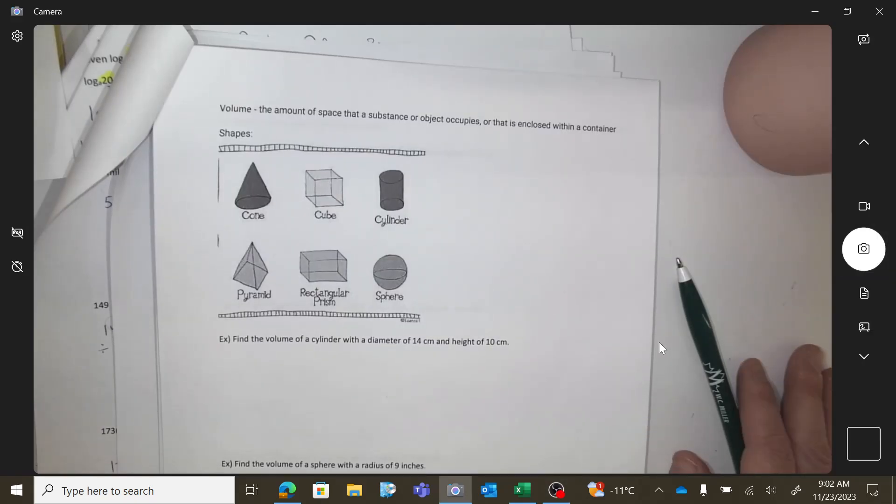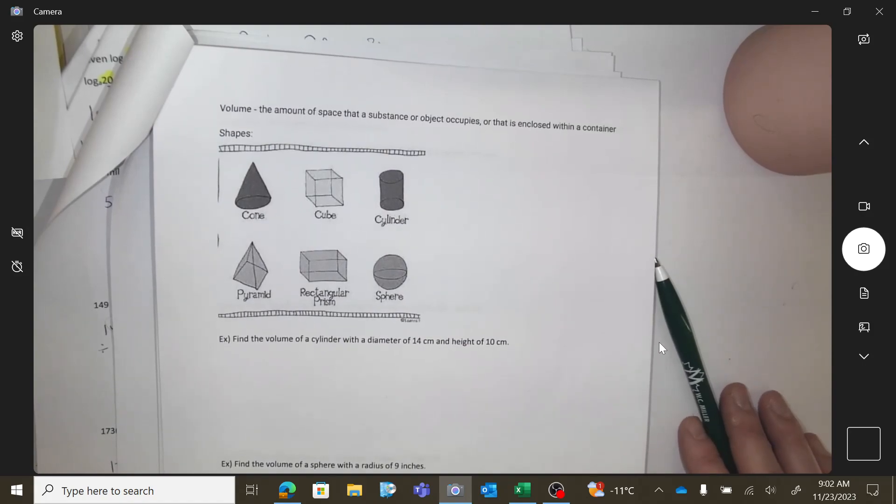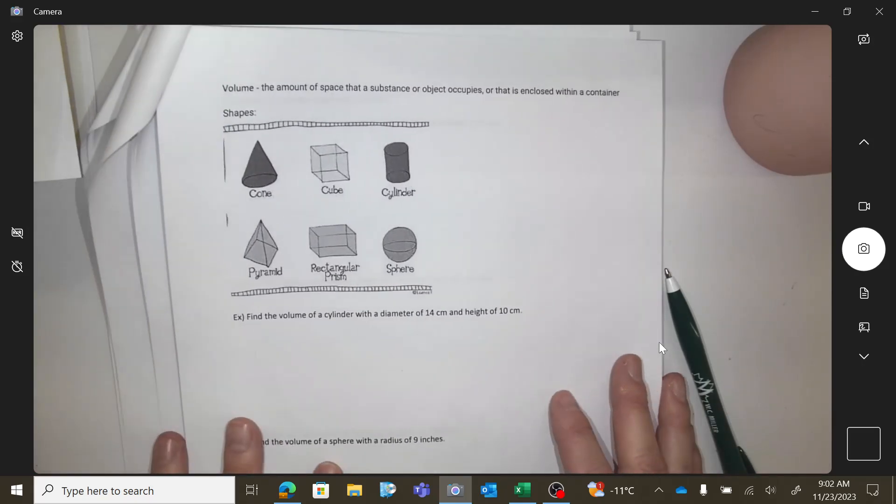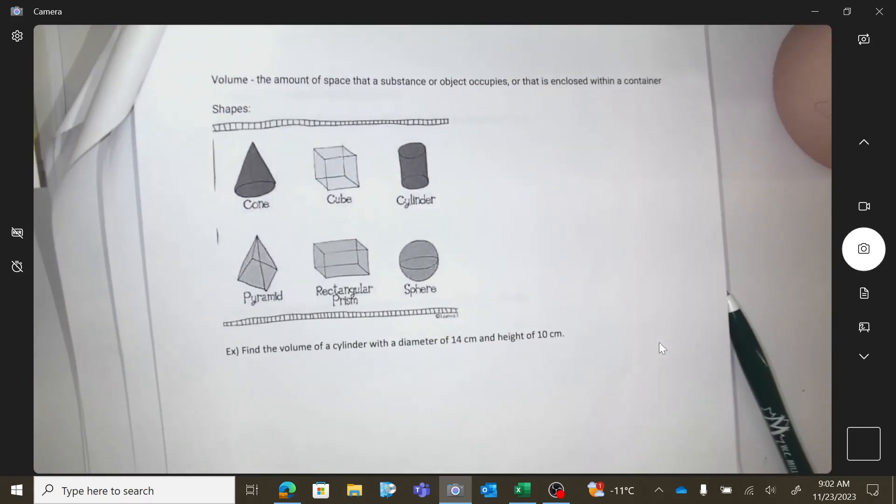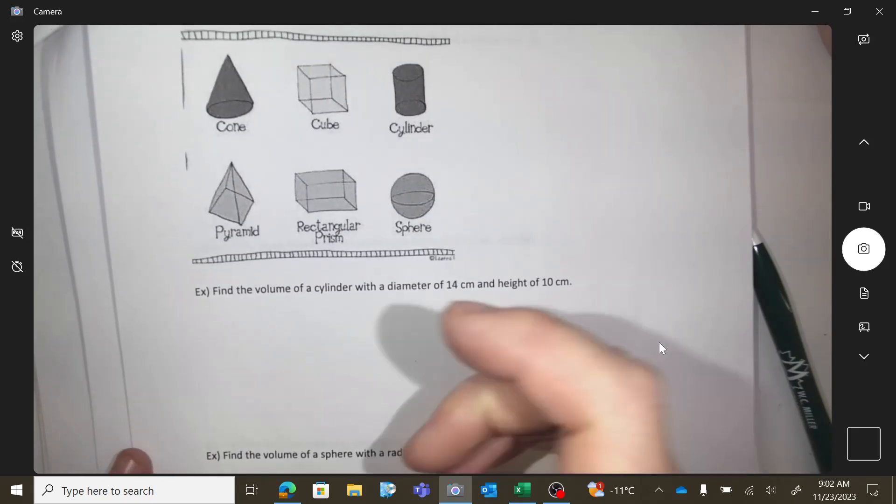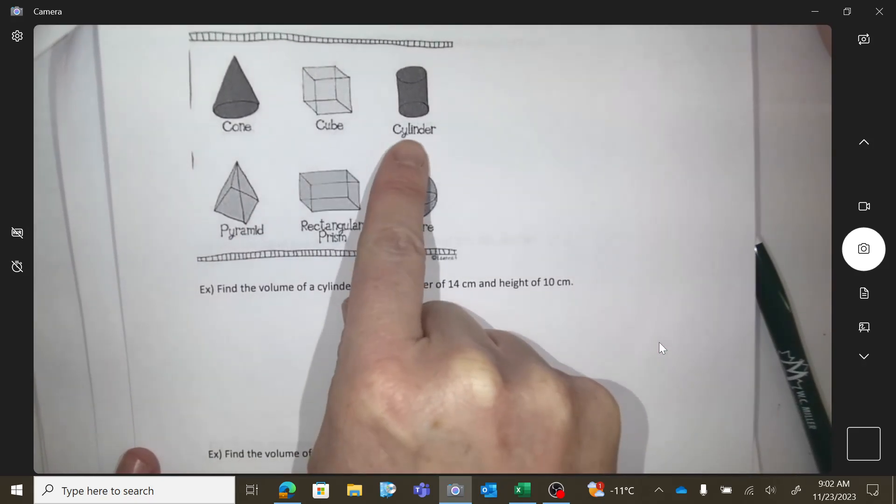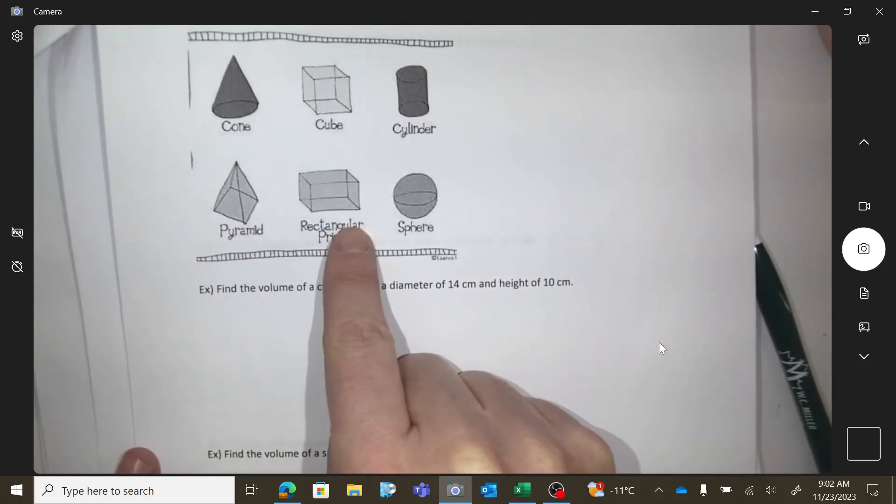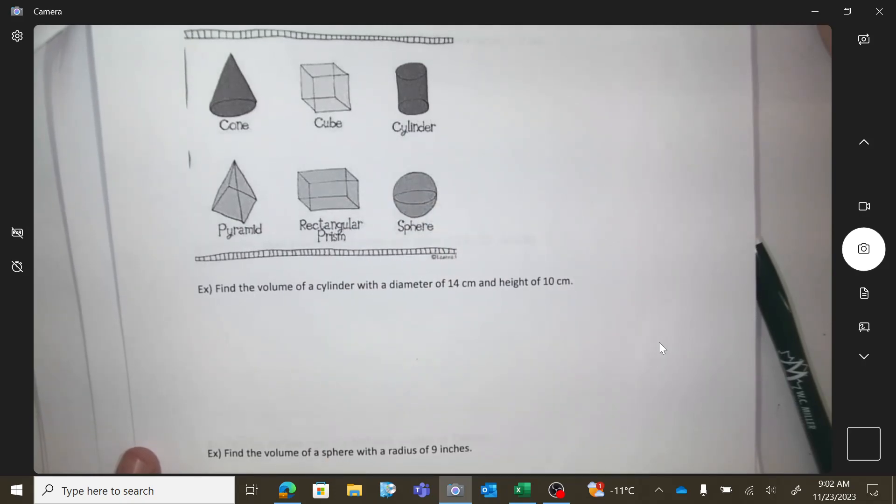Okay, so volume is going to talk about three-dimensional objects, and volume is about the space that's inside them. So here's an example of the shapes that you could see: cones, cubes, cylinder, pyramid, rectangular prism, or a sphere.